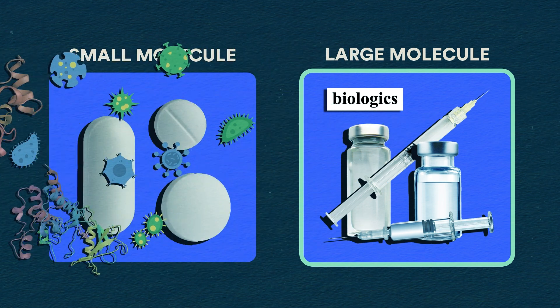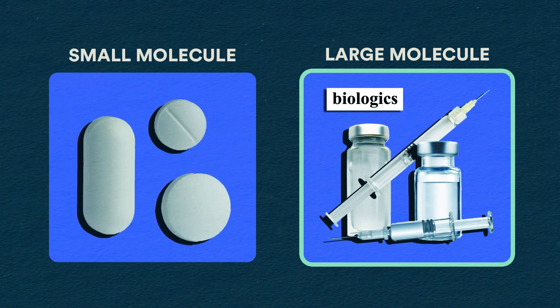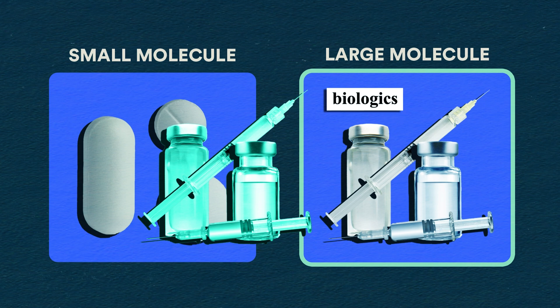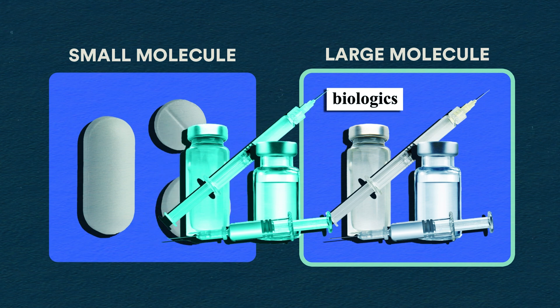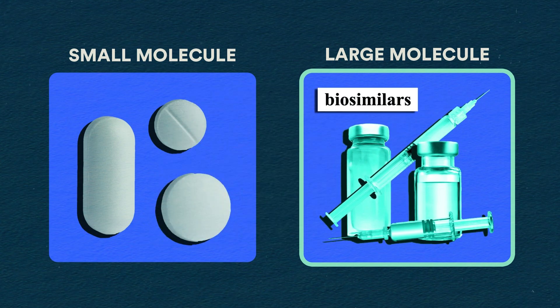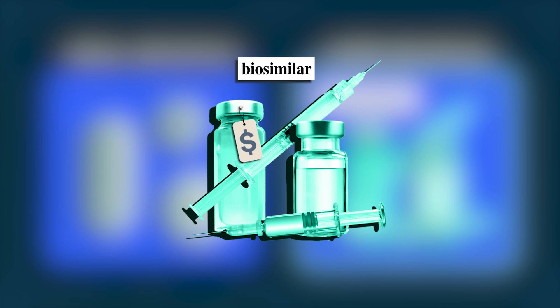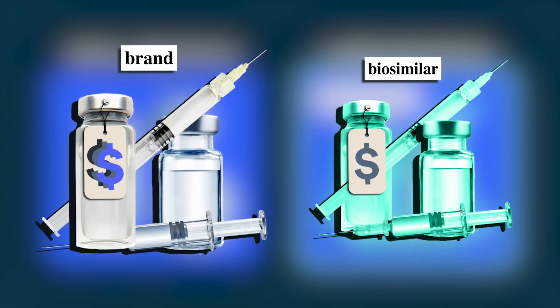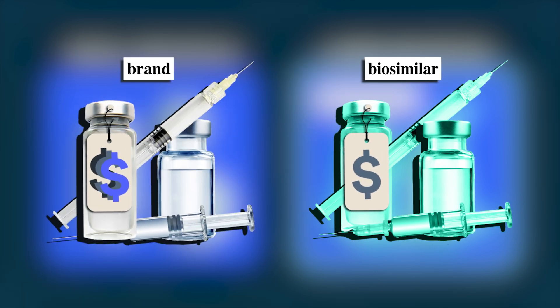And this means you cannot chemically replicate them like small molecule drugs. So it's more difficult to make generic versions of biologic drugs, which are more accurately called biosimilars. When you take a biosimilar, you're getting a less expensive drug that's highly similar to the brand name, but it's not an exact replica.